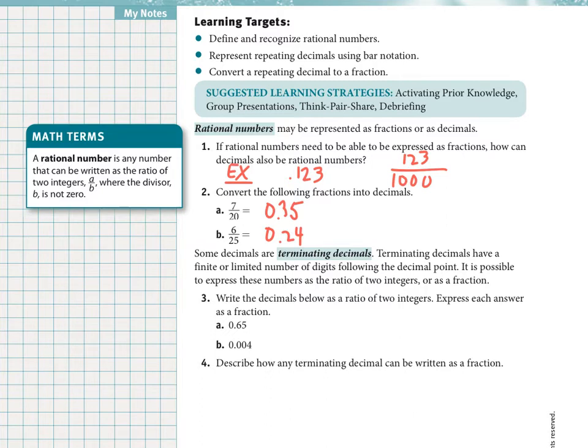Some decimals are terminating decimals like these. Terminating decimals have a finite or limited number of digits. We just saw those do not go on forever, like the number pi goes on forever. Here's a couple other examples to write as a ratio of two integers. This first number would be 65 over, count the digits after the decimal, tenths, hundredths, so 65 over 100.